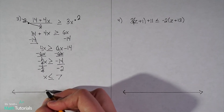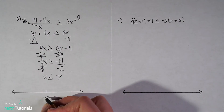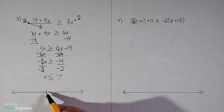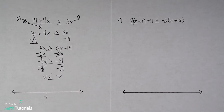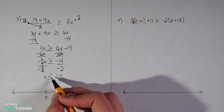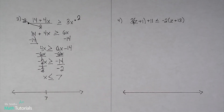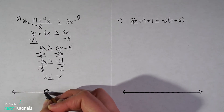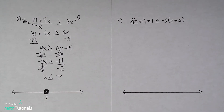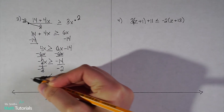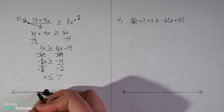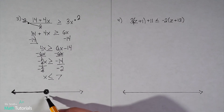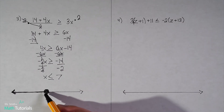Now I'm ready to graph. I'll put 7 in the center of my number line. In this case, the inequality does have an or-equal-to, so I draw a circle and fill it in — that shows 7 is included. As long as your variable is on the left, you go with whichever way it's pointing, and in this case it's pointing this way, so I shade to the left. Looking at this graph, x could be 7 or anything less than 7.